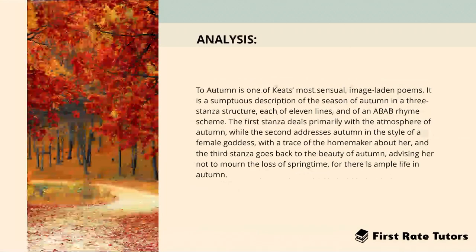When it comes to the poem itself, 'To Autumn' is one of Keats's most sensual, image-laden poems. It's a sumptuous description of the season of autumn in a three-stanza structure, each of eleven lines and of an ABAB rhyme scheme.